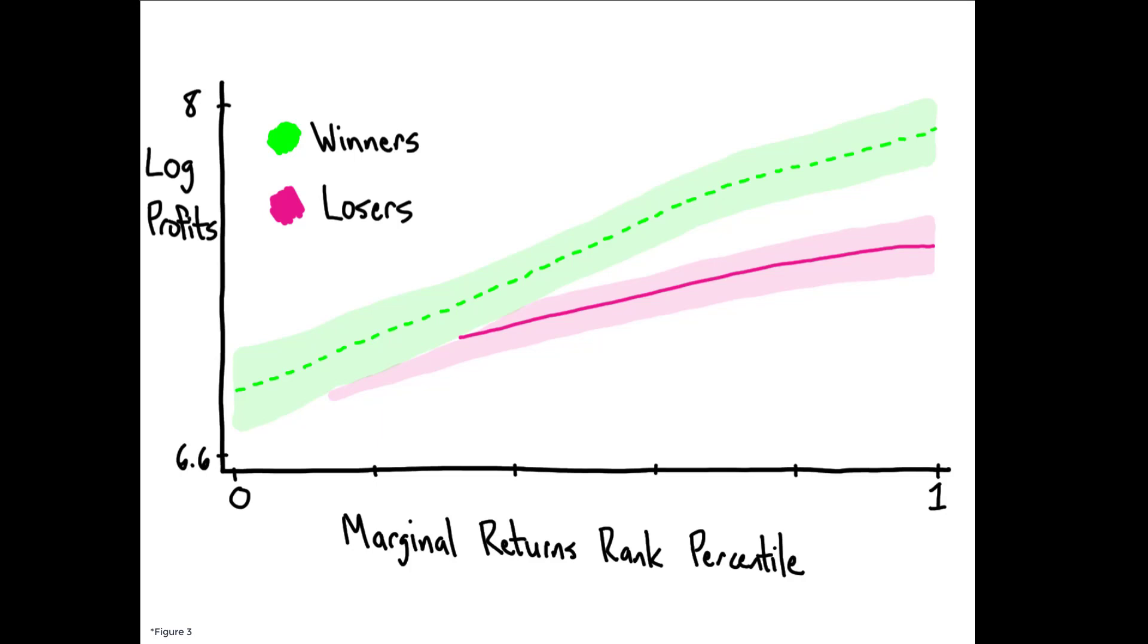The key, however, lies in the gap between these two lines. This measures marginal profits. In other words, the increase in profits that results from randomly receiving a grant as a result of the study, and we see that this gap is wider for those with higher marginal returns rank. Put another way, community rankings are highly predictive of actual marginal returns to capital.